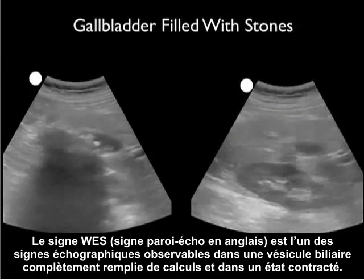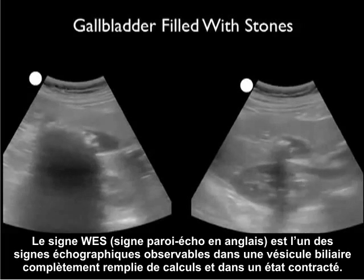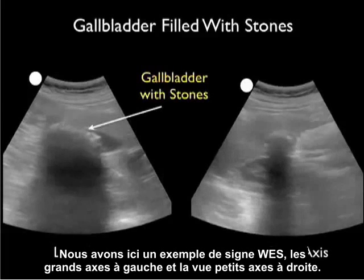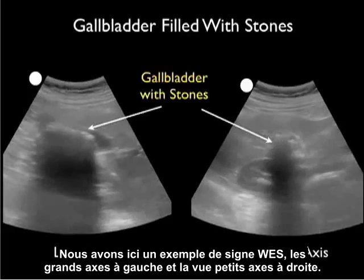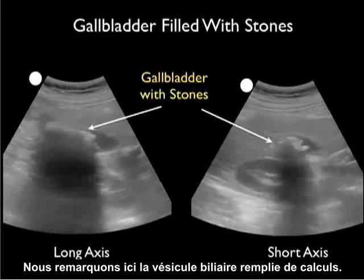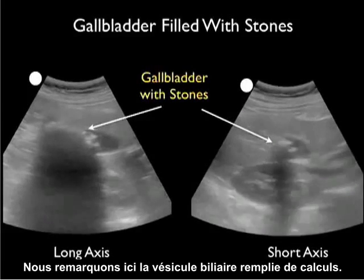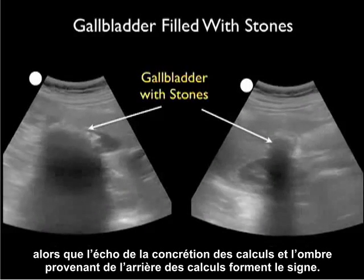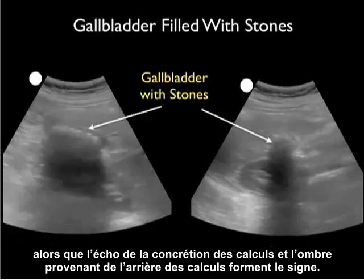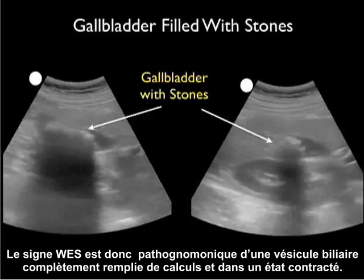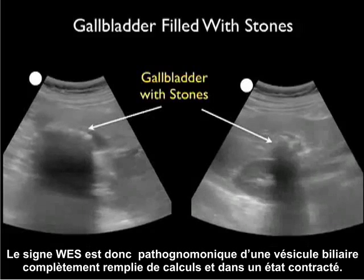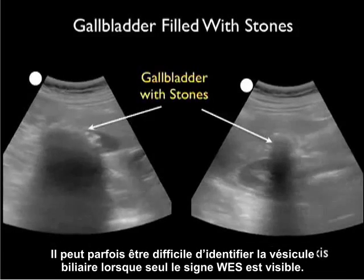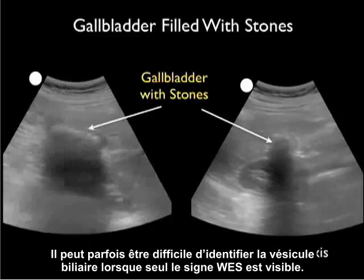A sonographic finding seen with a gallbladder completely filled with stones in a contracted state is the wall echo sign. Here we see an example of the wall echo sign in long axis on the left and short axis on the right. What we see is the gallbladder filled with stones — all we see is the anterior wall of the gallbladder, the echo from the concretion of stones, and the shadow off the back of the stones making the sign. The wall echo sign is pathognomonic for a gallbladder completely packed with stones in a contracted state, and it can be occasionally difficult to find the gallbladder when all you see is the wall echo sign.